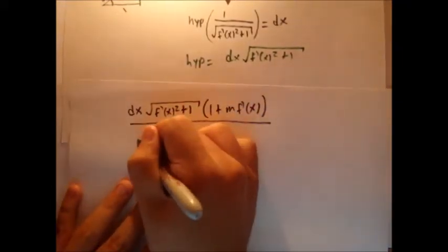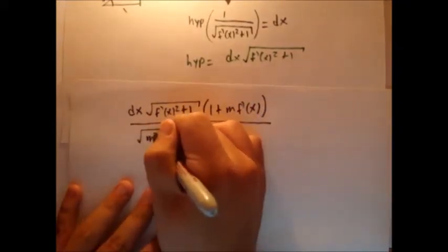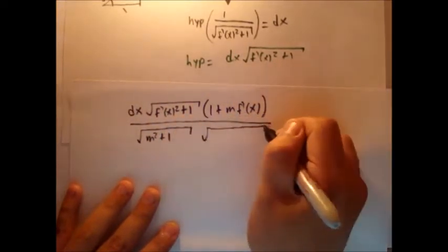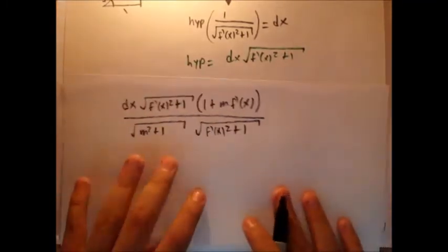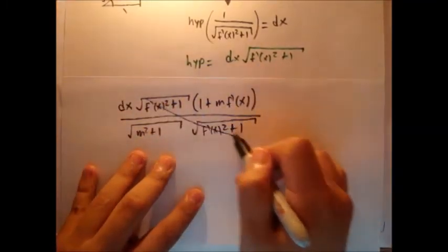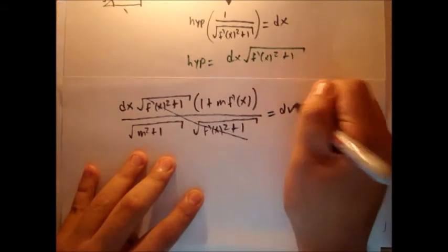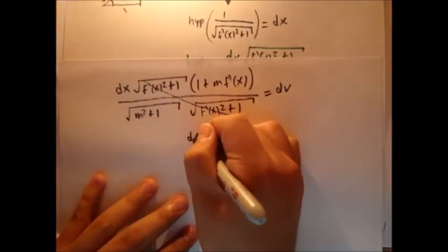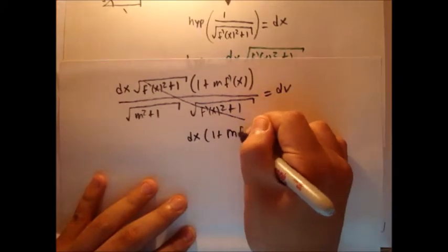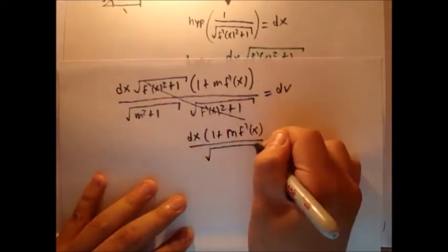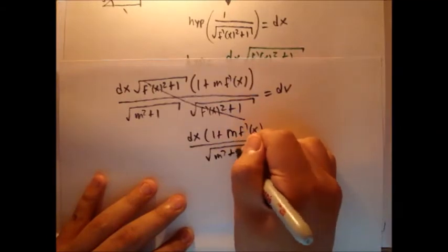Divided by what we had in the bottom. Square plus 1 times square root f prime of x square plus 1. And now I really get excited when things just cancel out because it gets simpler. That cancels out. And remember, this was equal to dv.